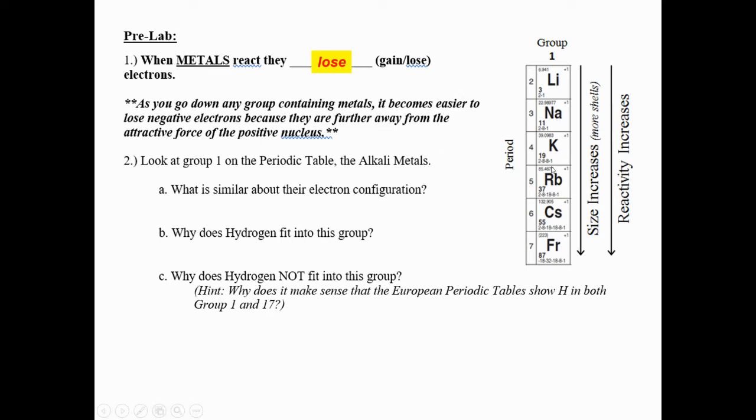Looking down group one, that's column one on the periodic table, these guys all have one valence electron. That gives them similar properties. When things have the same number of valence electrons, they tend to have similar properties.